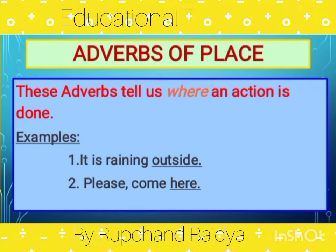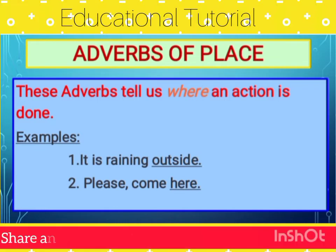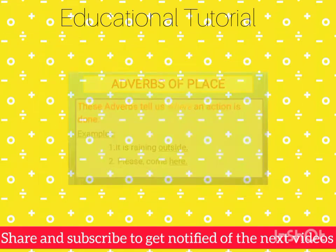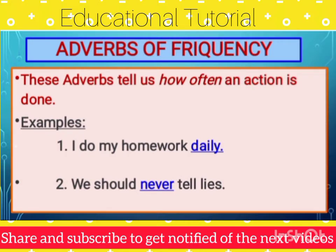Next we have adverbs of place. These adverbs tell us where an action is done. Look at the examples: 'It is raining outside' — where is it raining? Outside. So the adverb 'outside' is an adverb of place. In the second example, 'Please come here' — where? Here. So the word 'here' is an adverb of place.